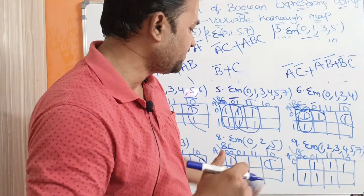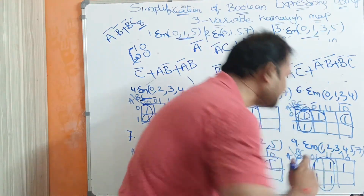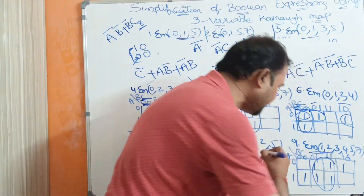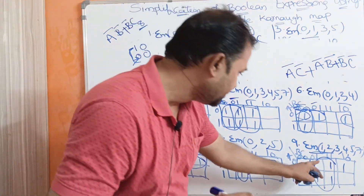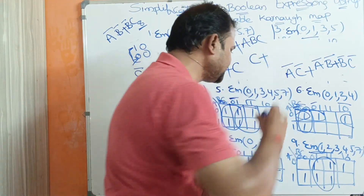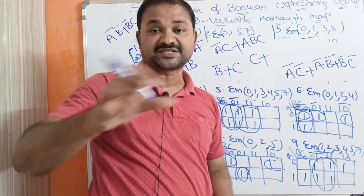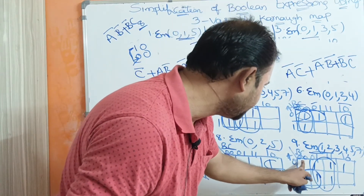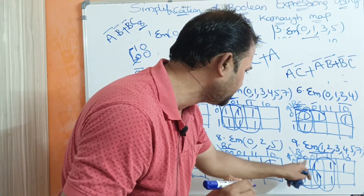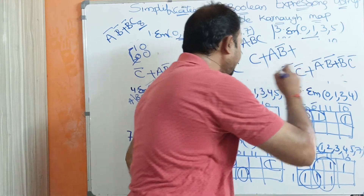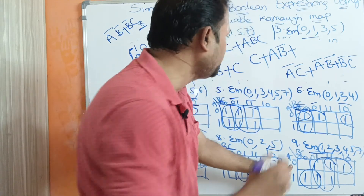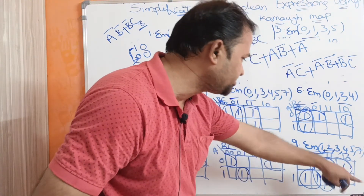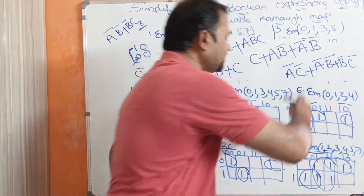Problem 9: ΣM(1, 2, 3, 4, 5, 7). We form a group of 4 using minterms 1, 3, 5, 7 (C=1 column): A changes (neglect), B changes (neglect), C is 1 — term: C. For minterms 4 and 5, group them: A is 1, B changes (neglect), B is 0 (B-bar) — term: A B-bar. For minterms 2 and 3, group them: A is 0 (A-bar), B is 1 — term: A-bar B. The simplified expression is C + A B-bar + A-bar B.